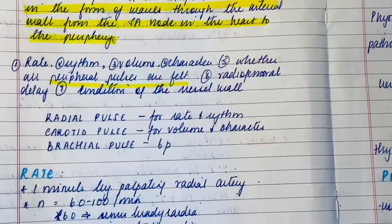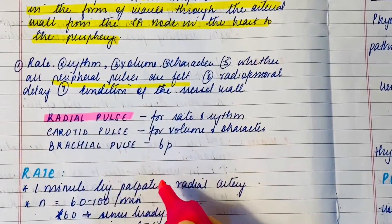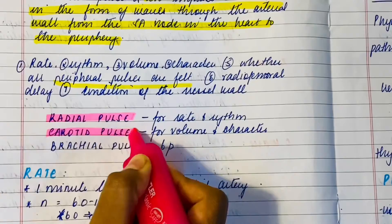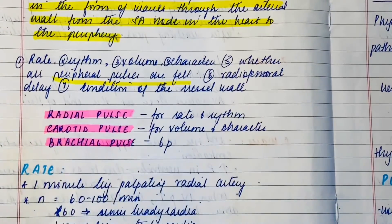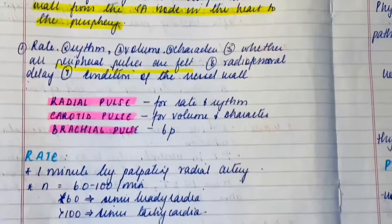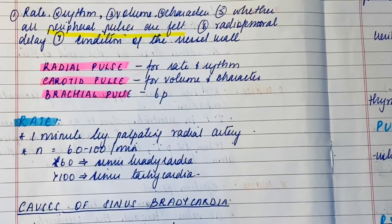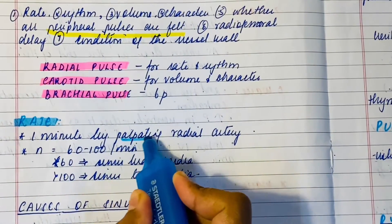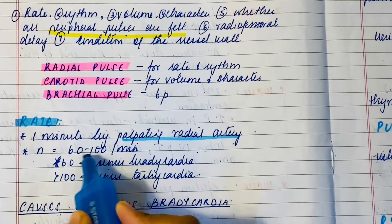For the purpose of rate and rhythm, the radial pulse is the best. For volume and character, it's the carotid pulse, and for blood pressure it's the brachial pulse. The rate should be calculated by palpating for one entire minute on the radial artery. Normally 60 to 100 is considered normal.